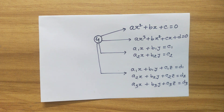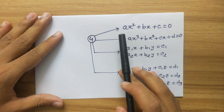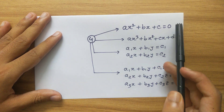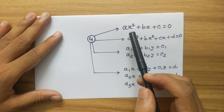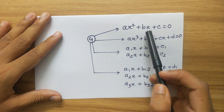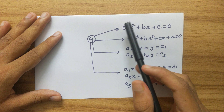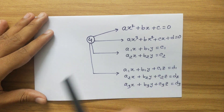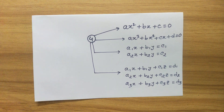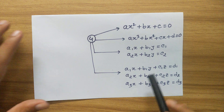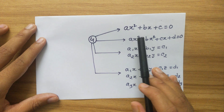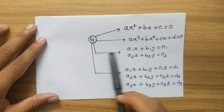The first type is AX squared plus BX plus C equals 0. In this equation we have one variable X and the highest power of X is 2. The second type is AX cubed plus BX squared plus CX plus D equals 0, where we again have one variable but the highest power is 3.